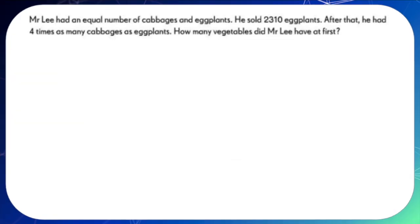Let's take a look at the last problem. Mr. Lee had an equal number of cabbages and eggplants. He sold 2,310 eggplants. After that, he had four times as many cabbages as eggplants. How many vegetables did Mr. Lee have at first?